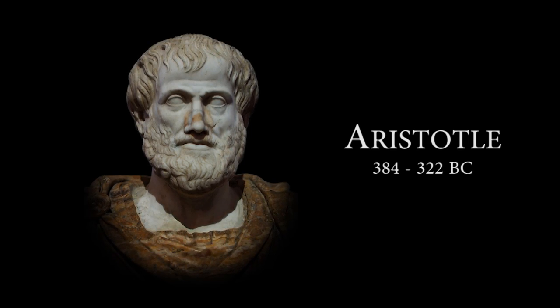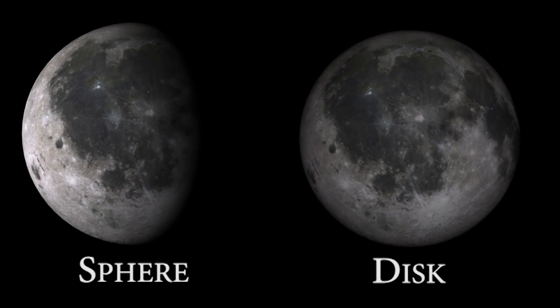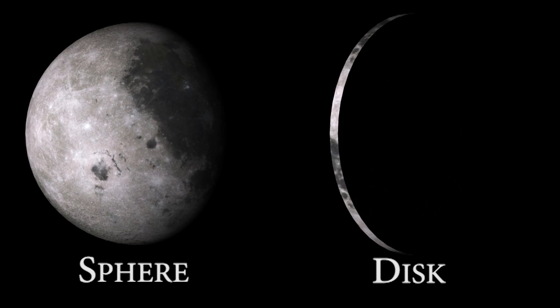Aristotle believed that the moon was a sphere, arguing that the phases of the moon were incompatible with a dish-shaped object.